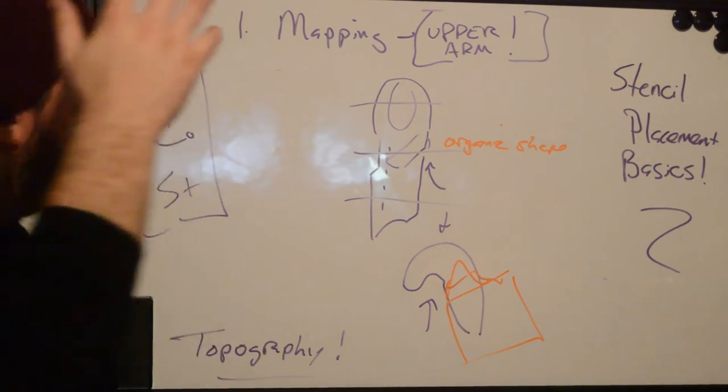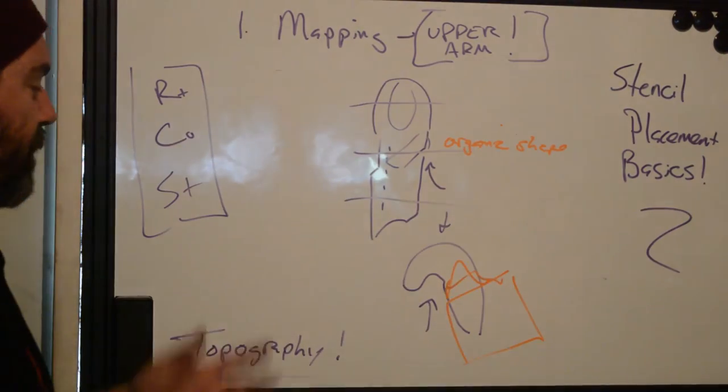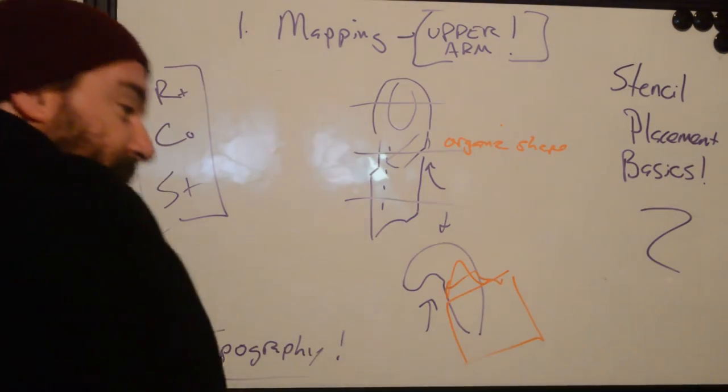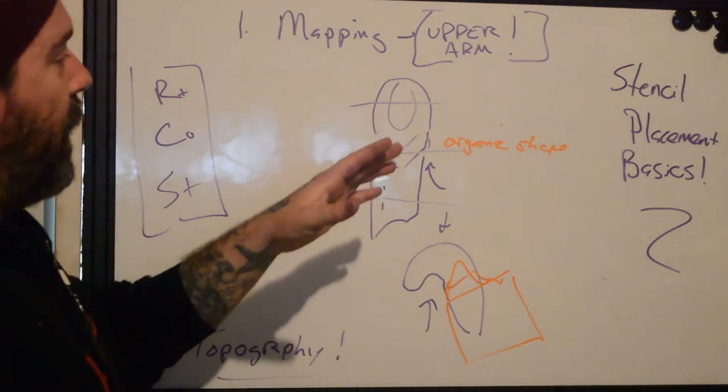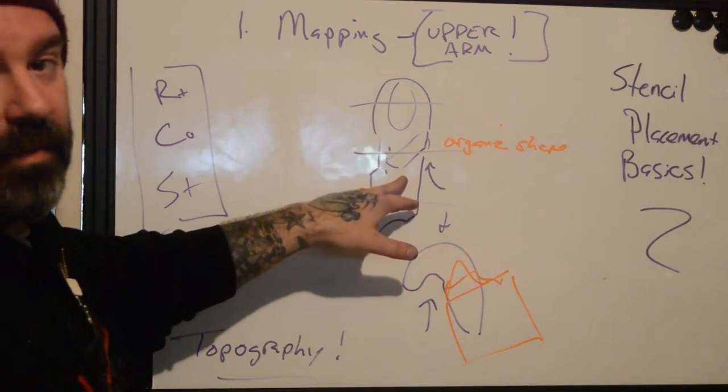Always start with the tricep, that's just kind of my thing. If you're going to map the whole upper arm out, just start there. See how that moves. When you see somebody walking around, really pay attention to the topography. Have them flex, bend, move, see all the different ways that goes depending on what they're doing, and then try to think about how that's going to influence your design.